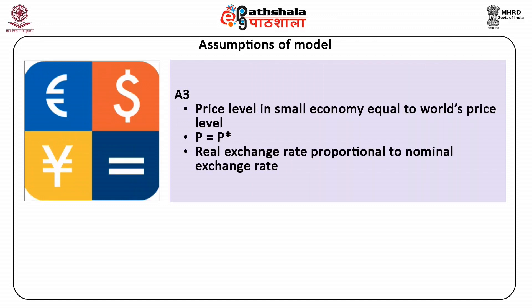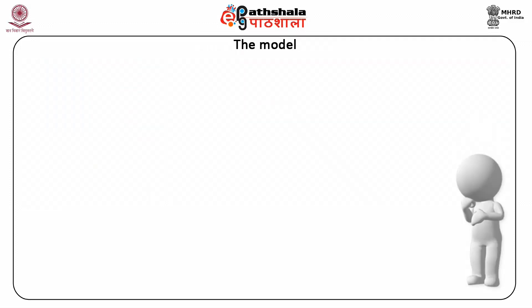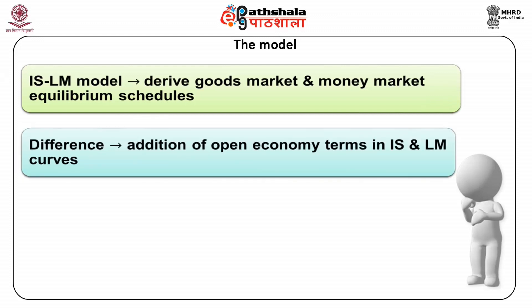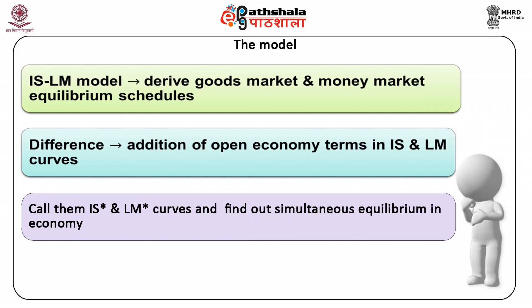Third, the price level in this small country, P, is equal to the world's price level, P star. Hence P equals P star. This implies that the real exchange rate is proportional to the nominal exchange rate. As in the IS-LM model, we derive the goods market and money market equilibrium schedules. The only difference is the addition of open economy terms in the IS and LM curves, called IS star and LM star curves. Finally, we find the simultaneous equilibrium in the economy.